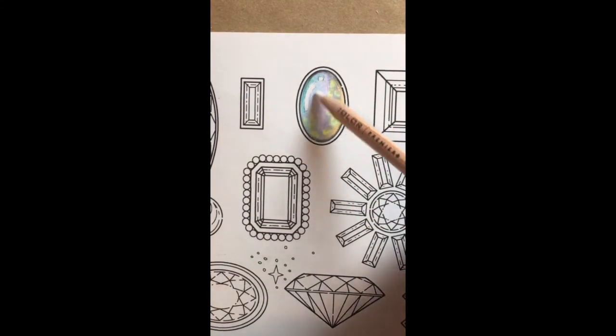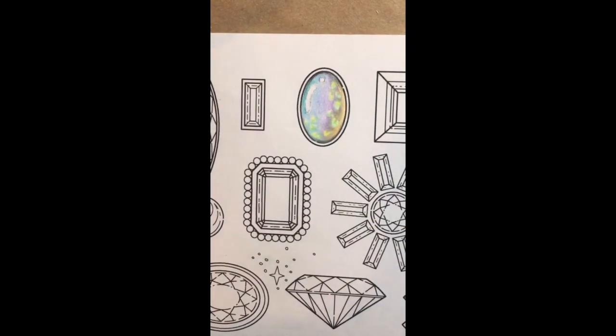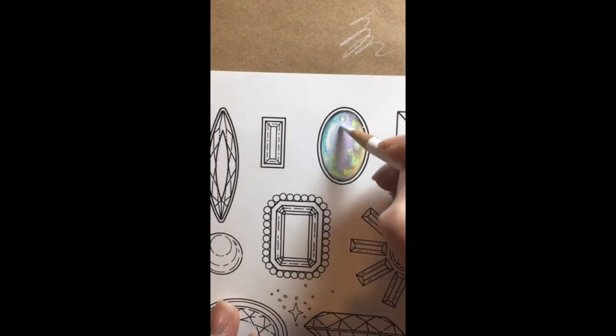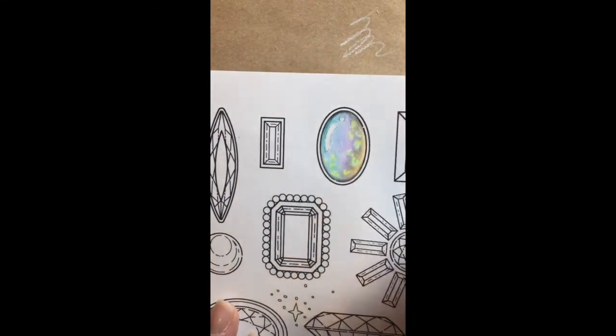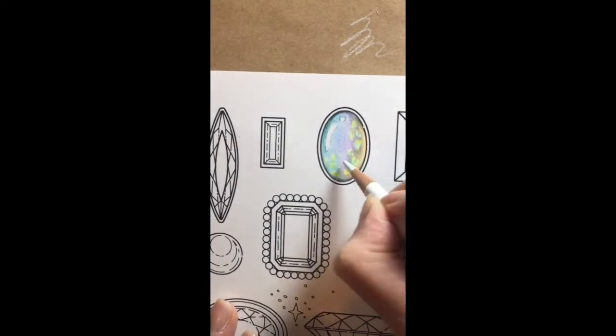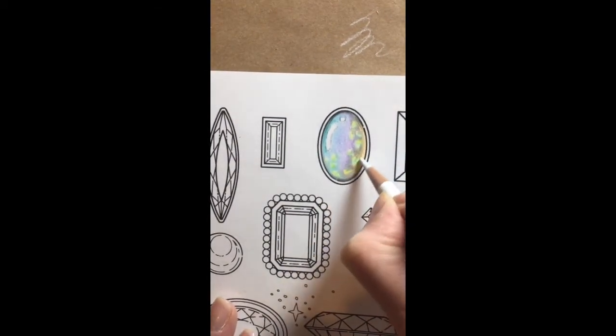A little bit of blending. You can choose to use either your colorless blender or a white pencil. For an opal as light as this one I prefer to use a white pencil because sometimes a colorless blender will darken our colors a little bit too much.